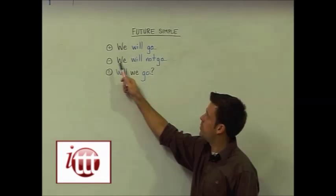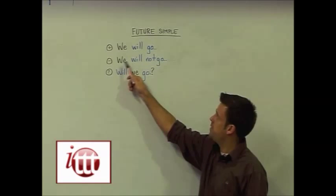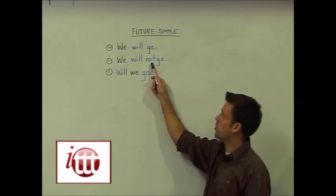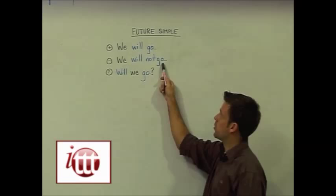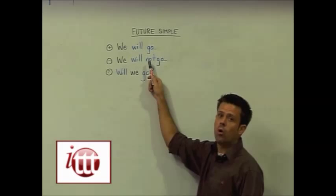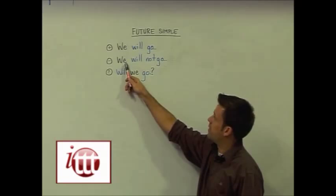To make the negative form, we begin with our subject again, followed by 'will.' Here we've included the word 'not' just before our main verb 'go.' 'Will not,' of course, can be contracted into 'won't,' and the sentence will still be fine.